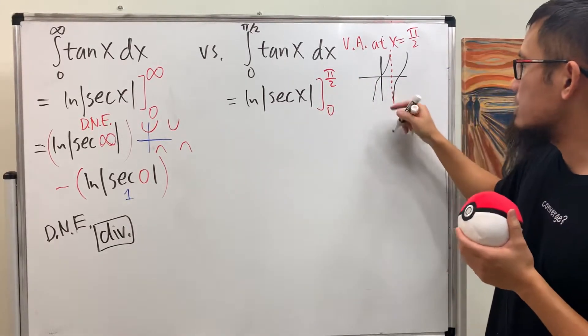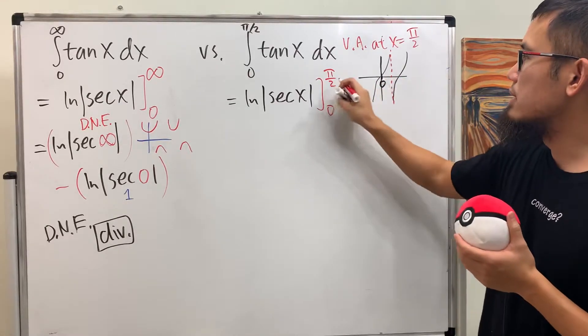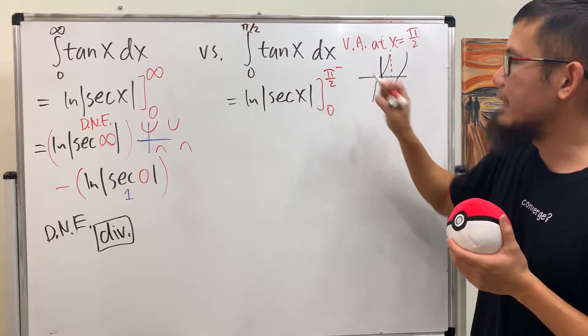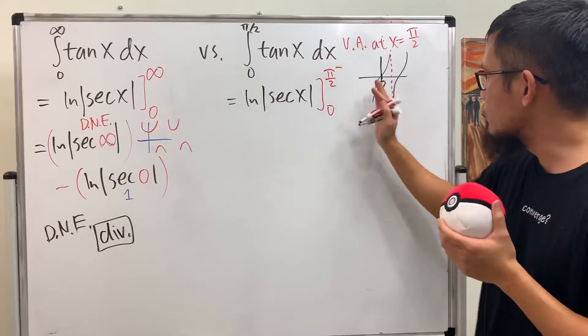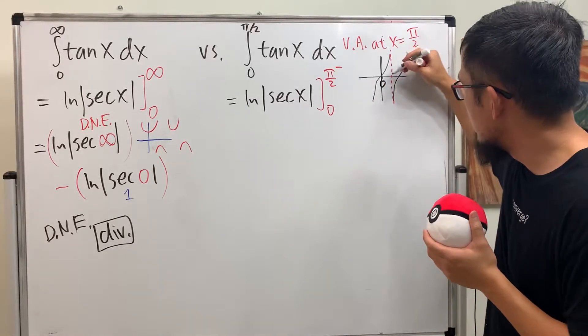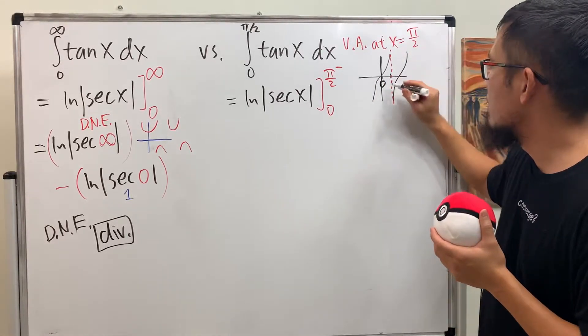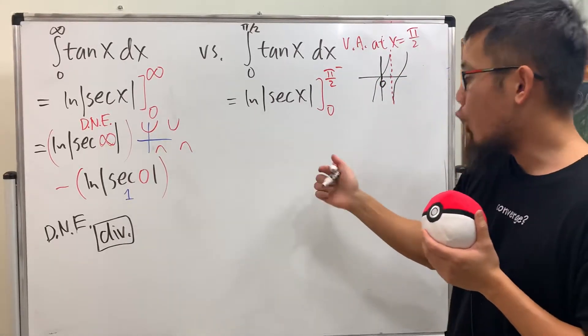But technically though, this time, because we are going from 0 to π over 2, this is π over 2 minus. We are approaching π over 2 from the left-hand side, like right here. A little bit before that.